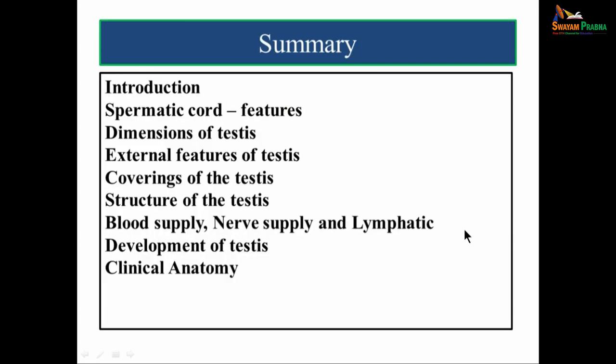In summary, we had a brief introduction on the clinical aspects of the testis. We then discussed the features of spermatic cord, its coverings, the dimensions of testis, the external features of testis, coverings, and structure of the testis. We discussed blood supply, nerve supply, lymphatic drainage, development and descent of testis, and concluded with clinical anatomy. Thank you.